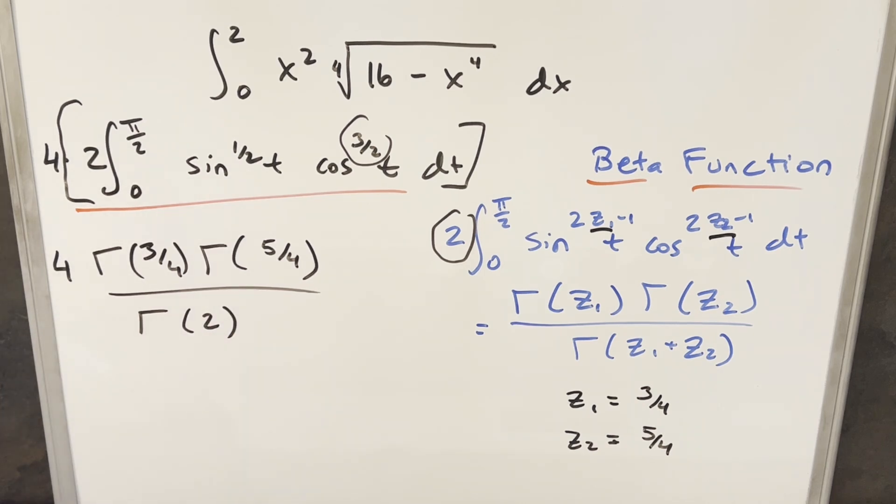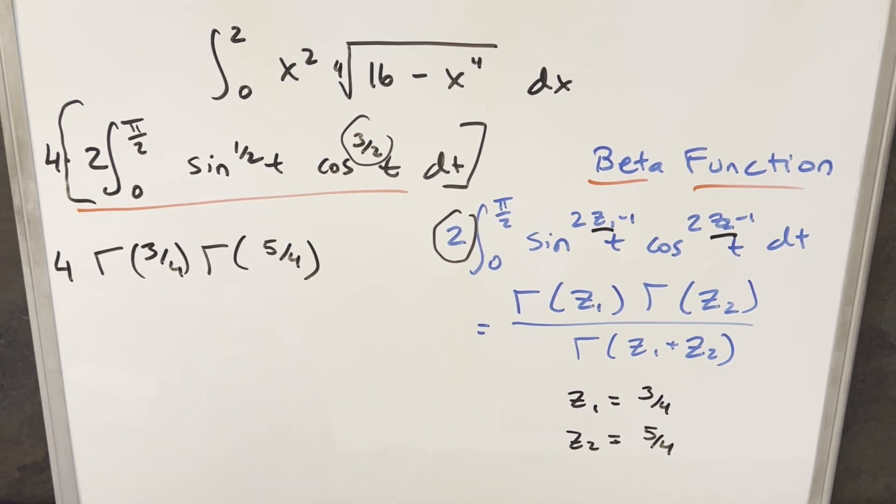Now we'd like to go ahead and simplify this. For positive integers, it's actually pretty easy because the gamma function can be related to the factorial. So we can use this formula on this and say that gamma of n plus 1 is the same thing as n factorial. So using here on this for gamma of 2, that's going to be the same thing as 1 factorial. But 1 factorial is just 1. So this piece here is just going away.